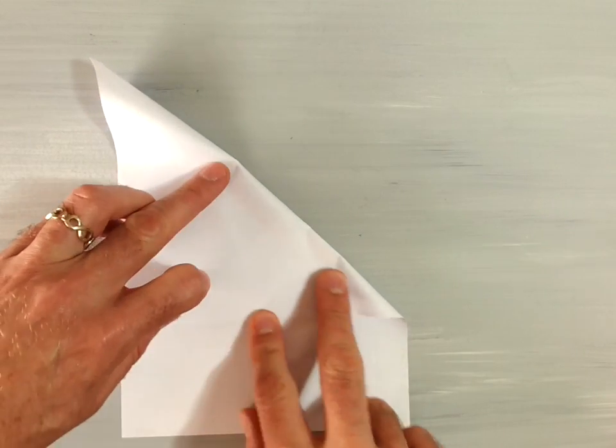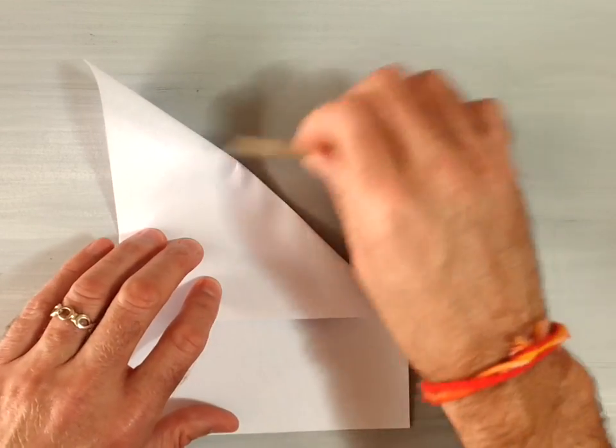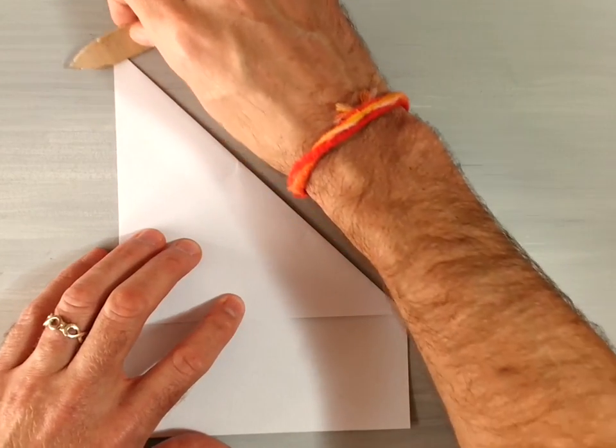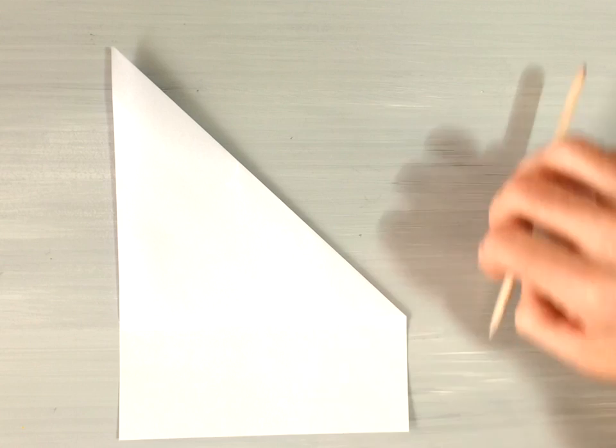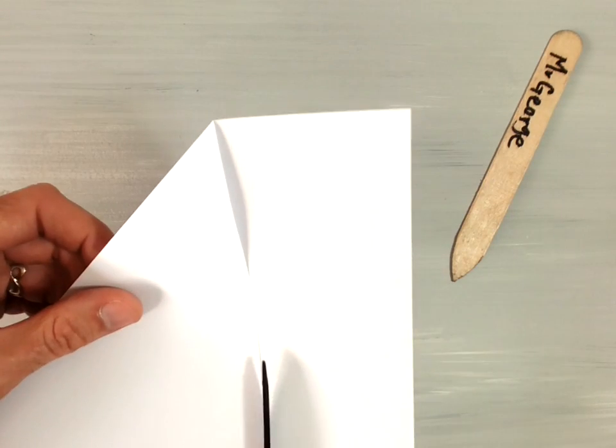If you take your paper and fold it here, you'll have a perfect right triangle. Once you have your right triangle, cut this bottom section off.